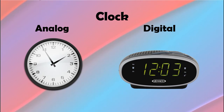Analog clock is a clock that usually uses 1–12 with hands as the time indicator. While digital clock is a clock that uses 4 digits as the time indicator.